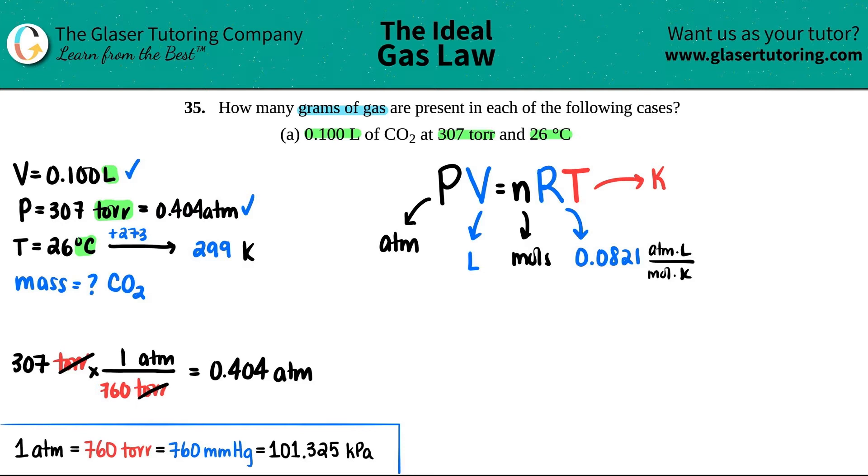So it looks like I have a pressure, I have a volume, I know the R value and I have a temperature. So what we're going to do is we can find out the moles, and then from there we could find out the mass.